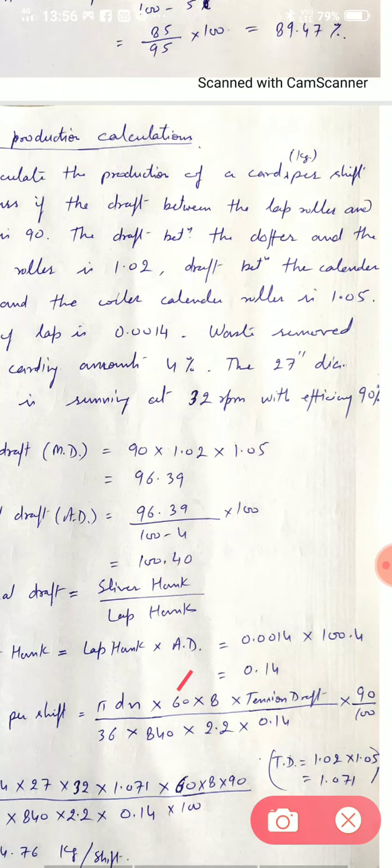Then it is multiplied by tension draft. Because the actual delivery role is coiler calendar role and there is a little amount of draft between doffer and coiler calendar role which is known as tension draft. So by multiplying tension draft with the surface speed of doffer we can find surface speed of coiler calendar role. Then 36 to convert into yards, then 840 to make it hank, then 2.2 to convert pound into kilogram. And 0.14 is the hank of sliver.